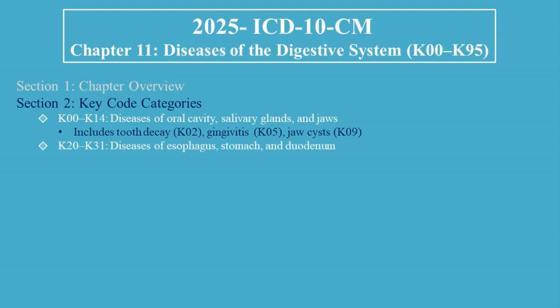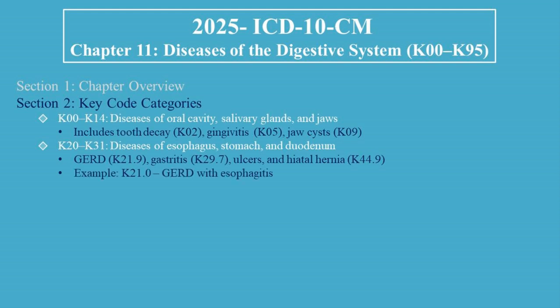K20 to K31 covers diseases of the esophagus, stomach, and duodenum — including GERD (K21.9), gastritis (K29.7), ulcers, and hiatal hernia (K44.9). For example, K21.0 is used for GERD with esophagitis.